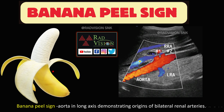This is the banana peel appearance. This is a longitudinal section of the aorta where both renal arteries originate from the aorta, and their appearance typically mimics a peeled banana — hence called the banana peel sign.